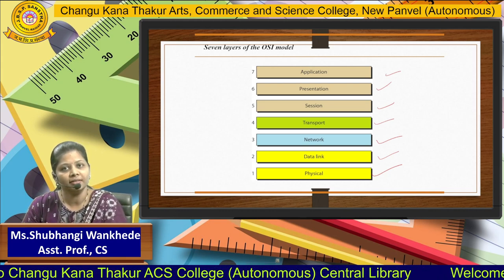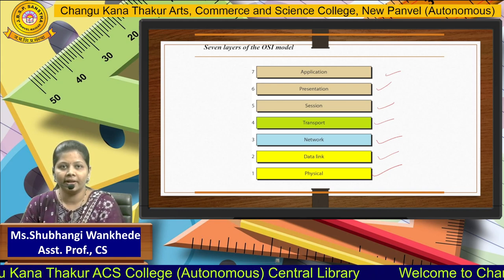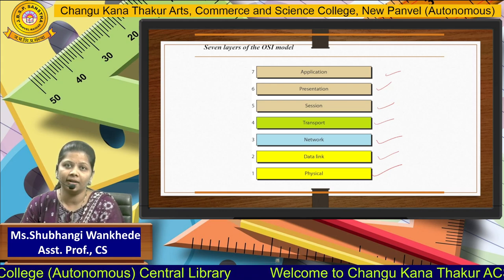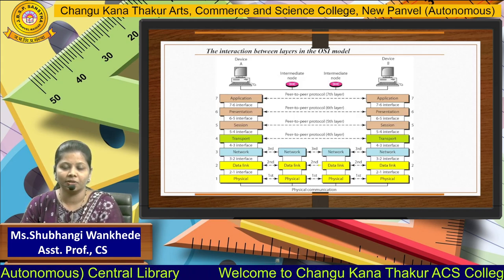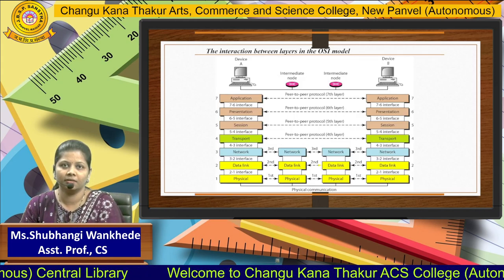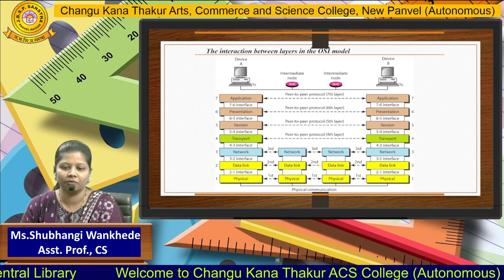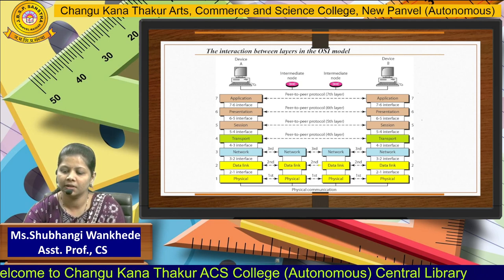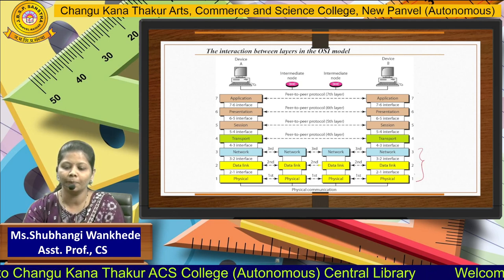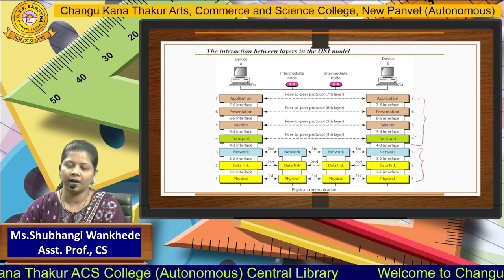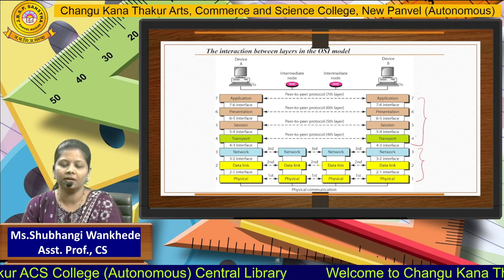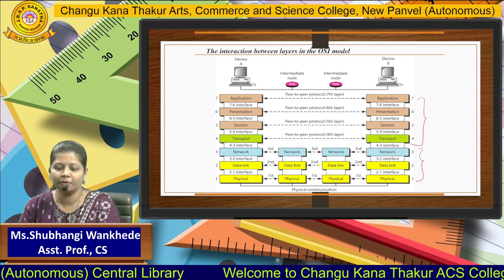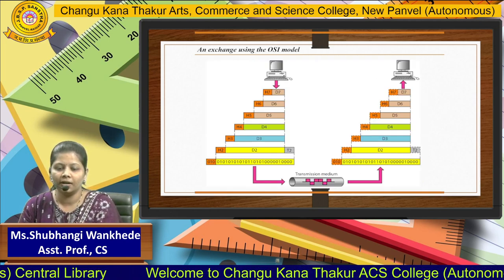These seven layers are present at both the sender side as well as the receiver side. Whenever the data is passed from sender to the receiver, the data passes through each and every layer at both sender as well as receiver. The first three layers are not peer-to-peer, and the last four — layers four, five, six, and seven — are peer-to-peer, directly connected to each other.